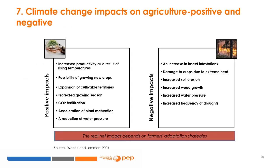Although there are positive impacts related to rising temperatures — such as the possibility of growing new crops, the expansion of cultivable territories, the lengthening of the season of protected crops, CO2 fertilization, the acceleration of plant maturation, and the reduction of water stress — the negative impacts are many: the increase in insect infestations, damage to crops due to extreme heat, increased soil erosion, weed growth, water pressure, and the frequency of droughts.